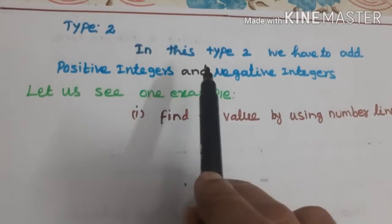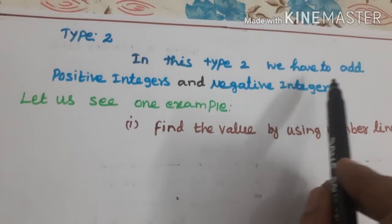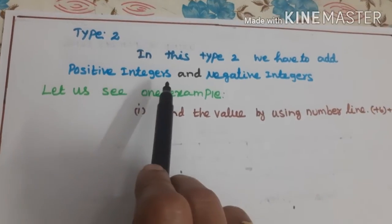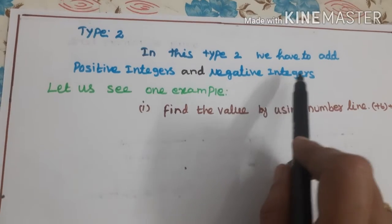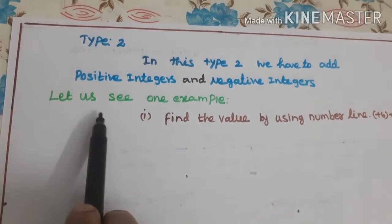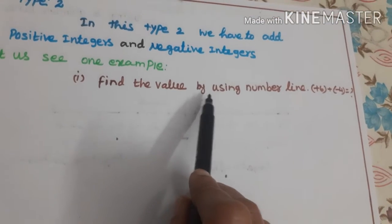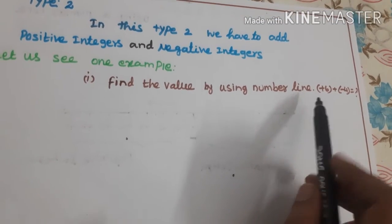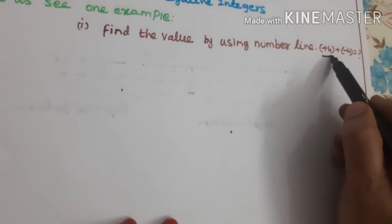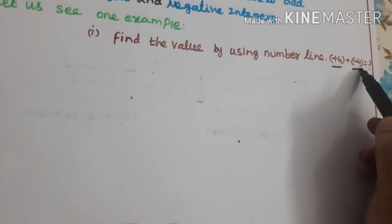Type 2: In this type 2, we have to add positive integers and negative integers. Let us see one example. Find the value by using a number line: positive 6 and negative 4.